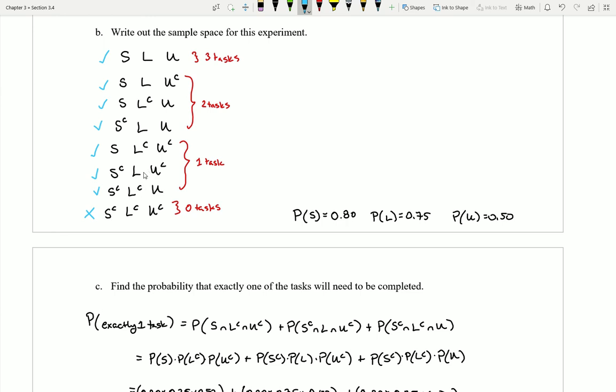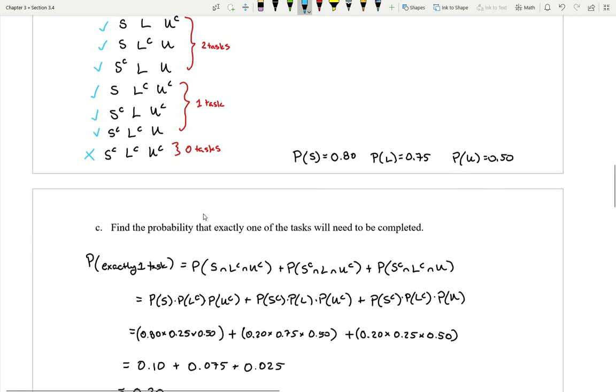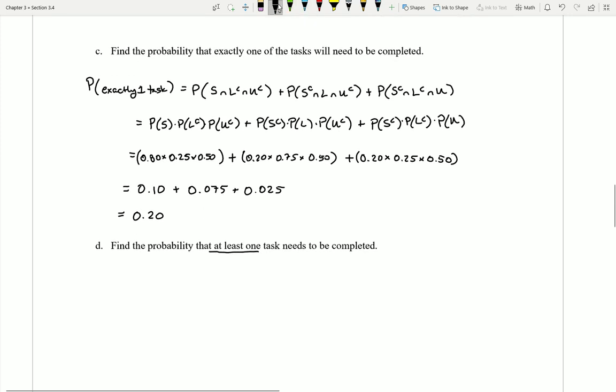So I can think here. I could find at least one task by finding one, two, three, four, five, six, seven different probabilities and adding them all together. That's not too bad because I already found four of them. So I just have to find three more. Or a much shorter approach. The probabilities for all of these events have to add up to 100%. So why not take 100% and chop out the only thing that we don't want?